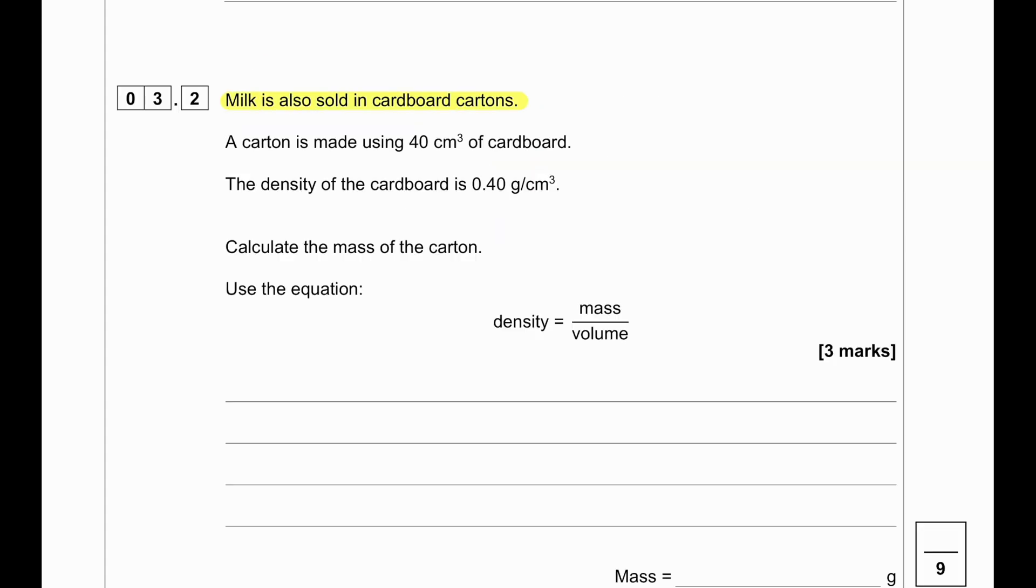Milk is also sold in cardboard cartons. A carton is made from 40 cm³ of cardboard. The density of the cardboard is 0.4 grams per cm³. Calculate the mass of the carton. Since we already know that density equals mass divided by volume, we need to find the mass of the carton. So we'll make the mass the subject. Mass will be equal to density times the volume. In this case, 0.40 grams per cm³ multiplied by 40. This gives us 16 grams.